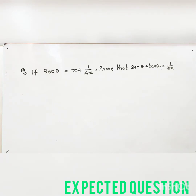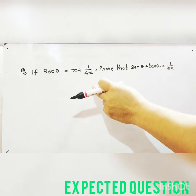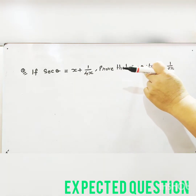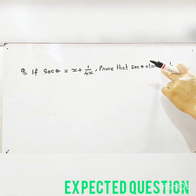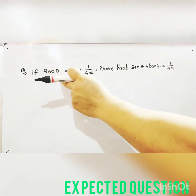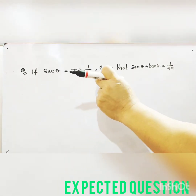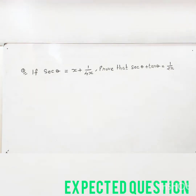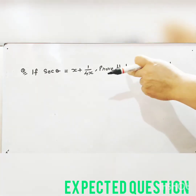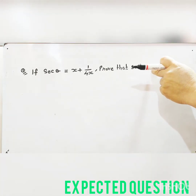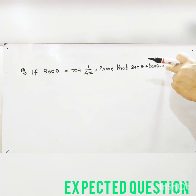If sec theta is equal to x plus 1 by 4x, prove that sec theta plus tan theta is equal to 1 by 2x.